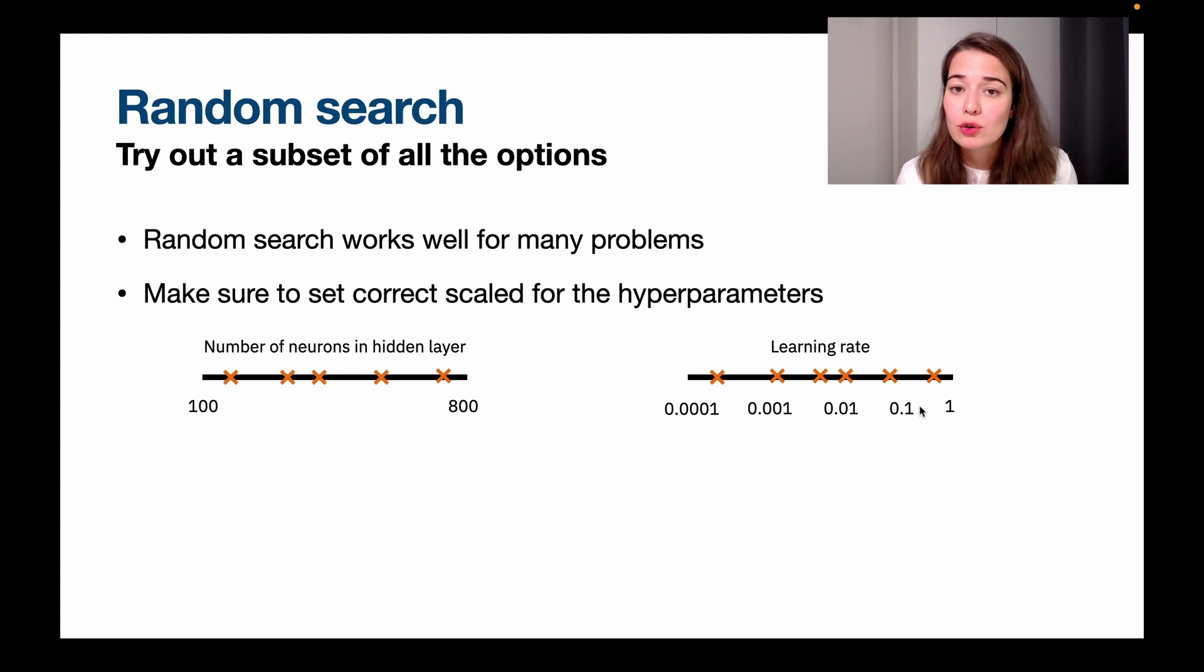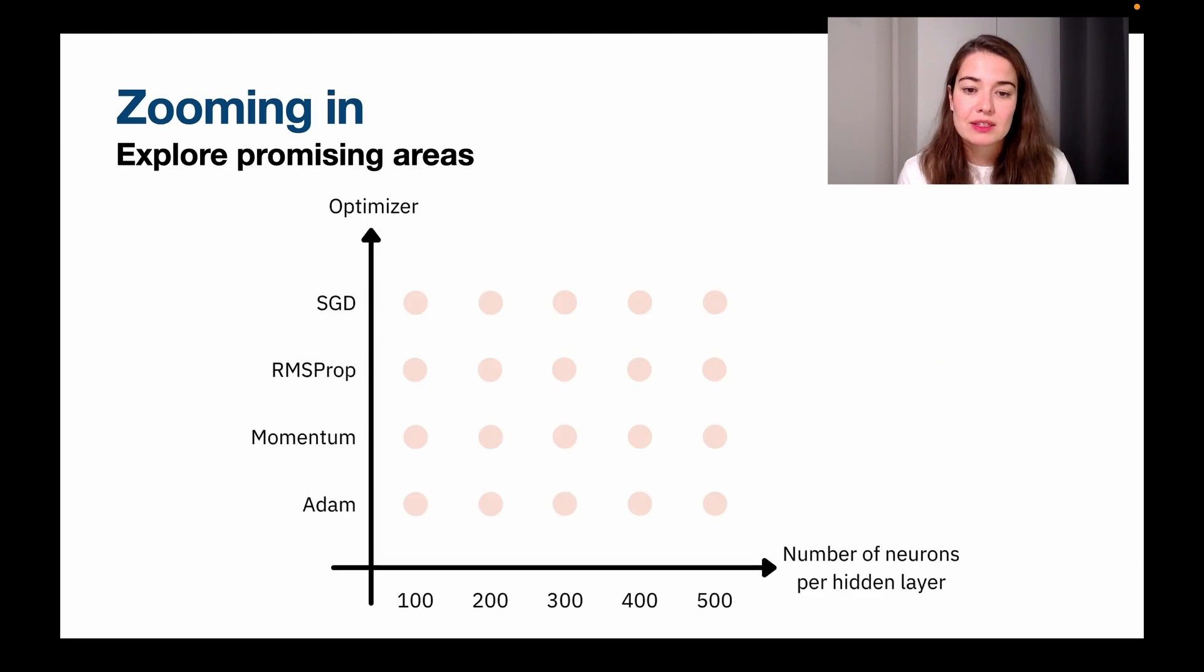But random search is not perfect, of course. There are some shortcomings. So if you just do random search once, you might not be able to find a really optimal value for your hyperparameters. So what people do is do manual zooming in. So let's see what that is.